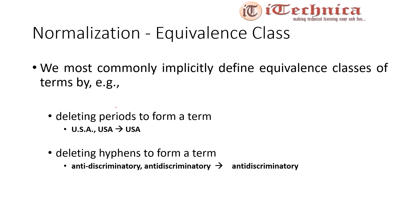To generate these equivalence classes, there are common rules to follow. The first rule says to delete periods to form a term — if we have tokens like 'U.S.A.' and 'USA', we map both to a single term 'USA'. The second rule says to delete hyphens to form a term — tokens like 'anti-discriminatory' and 'antidiscriminatory' are mapped into the single term 'antidiscriminatory'. This is how we generate equivalence classes.